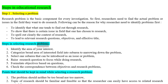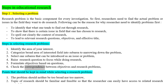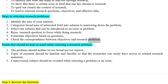Steps in Selecting Research Problems: Identify the area of your interest. Categorize the broad area of the interested field into sub-areas to narrow down the problem. Select one sub-area that can be introduced as an issue or problem. Raise research questions to focus on while doing research. Formulate objectives based on questions.